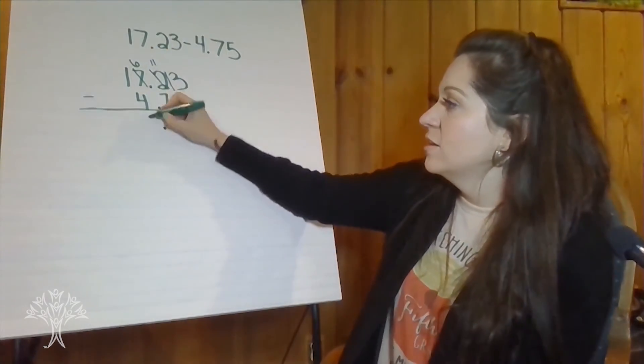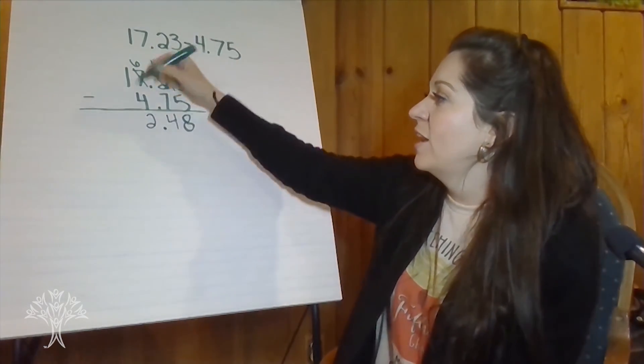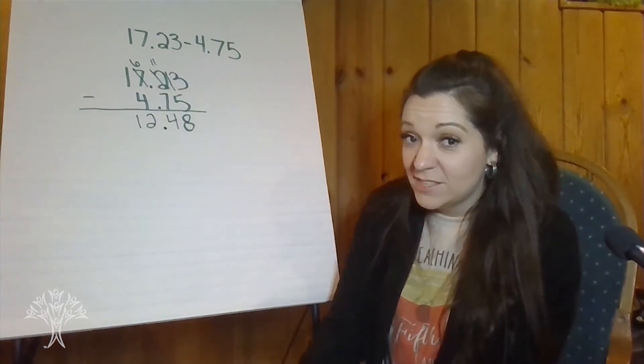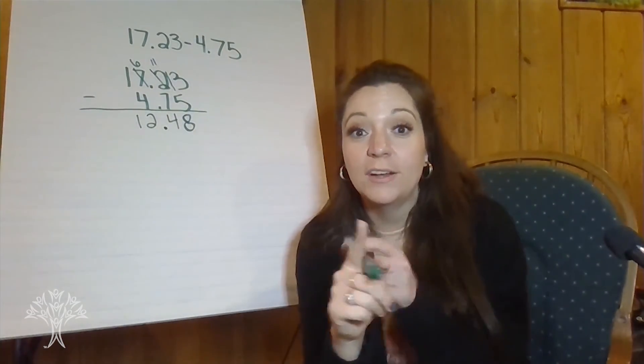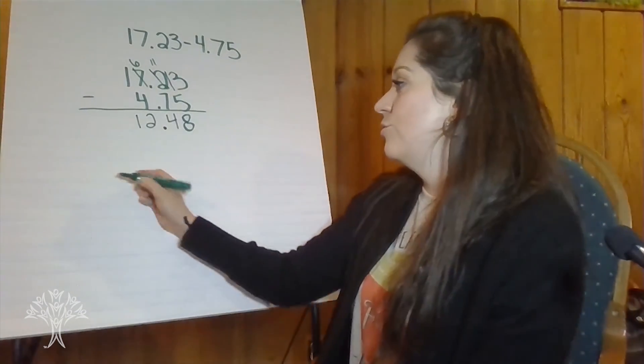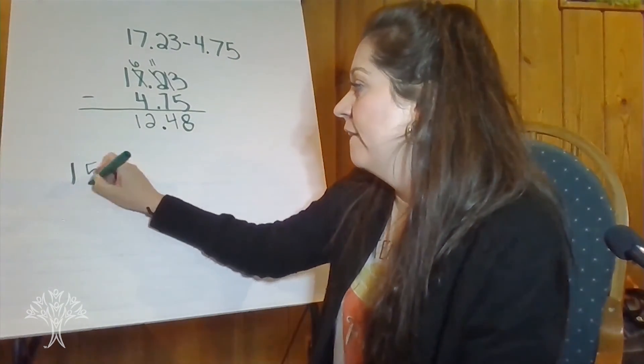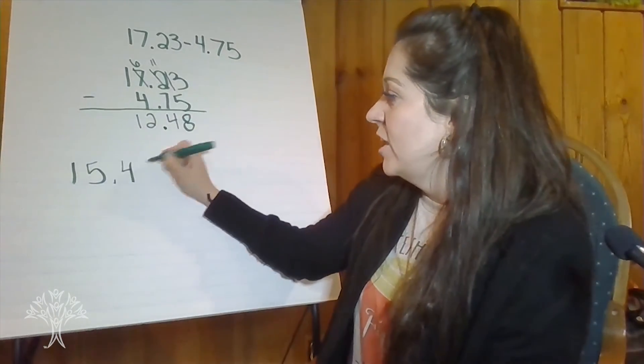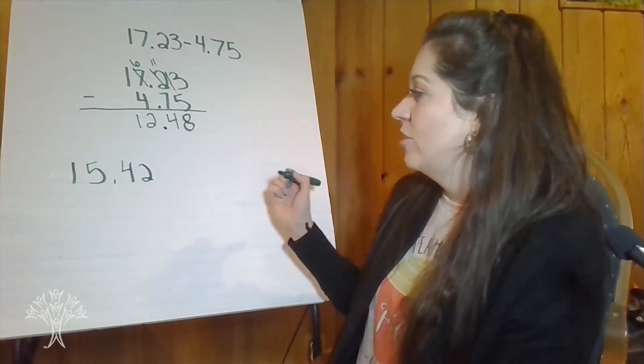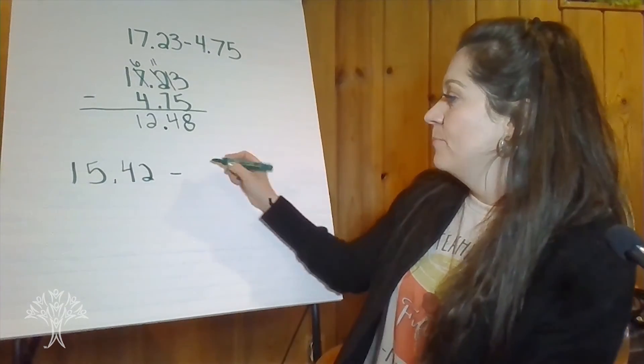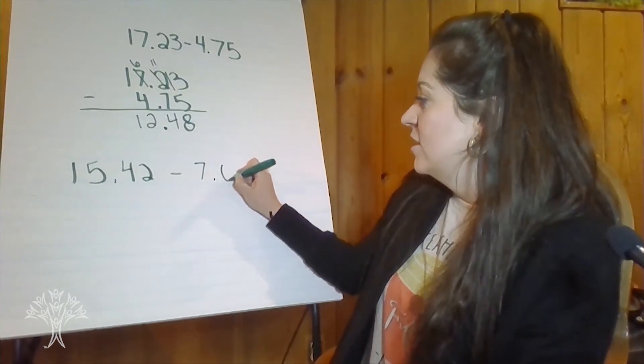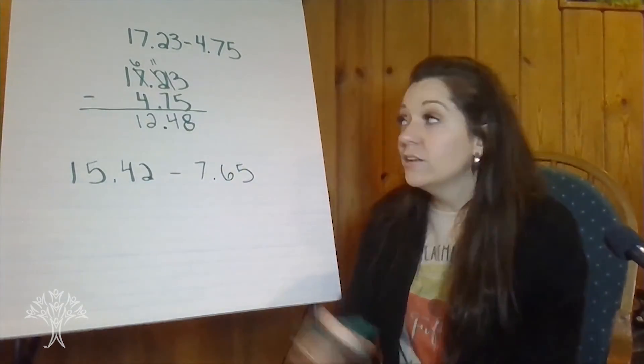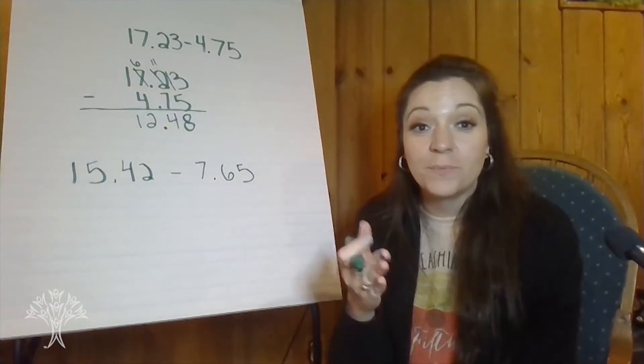Six take away four is two and one. Twelve and forty-eight hundredths. Okay, you're going to try one on your own. Let's see. Let's do fifteen and forty-two hundredths. Take away seven and sixty-five hundredths. Okay? Try the traditional algorithm. Go ahead.